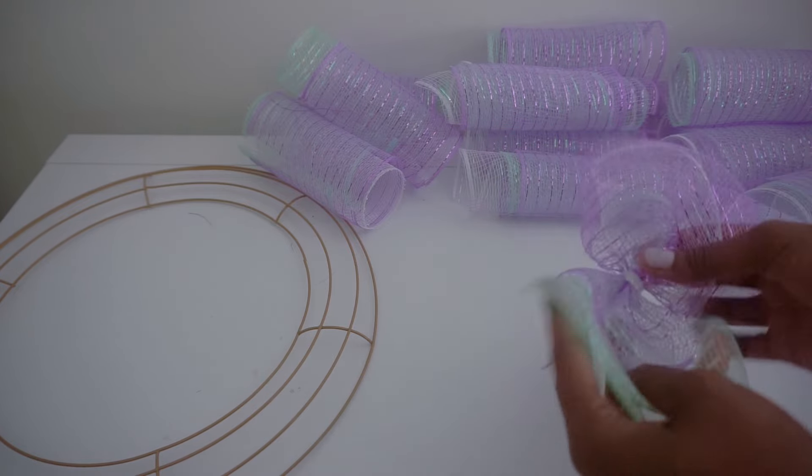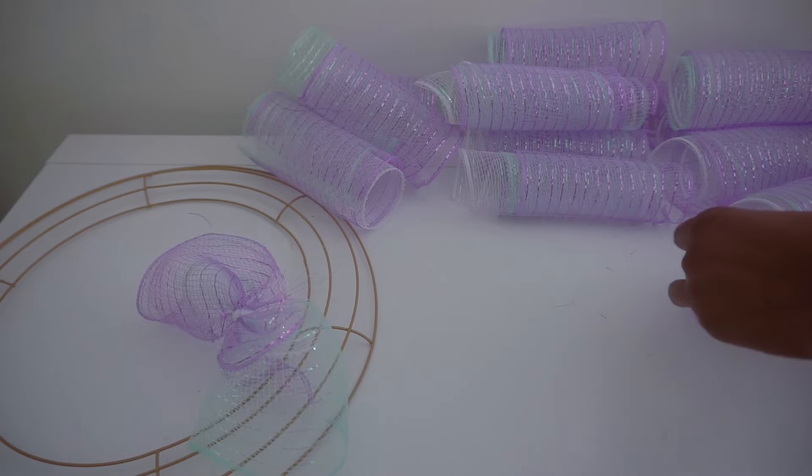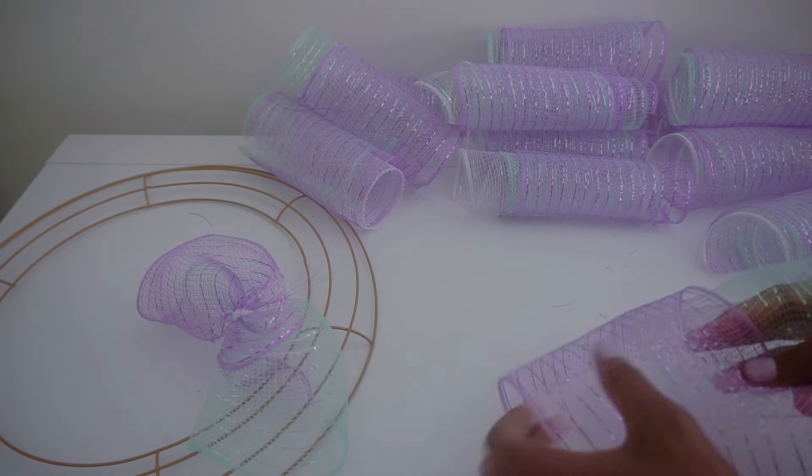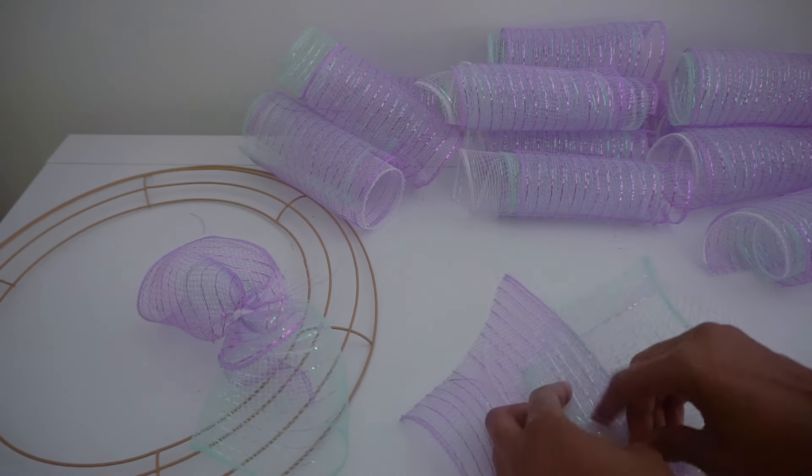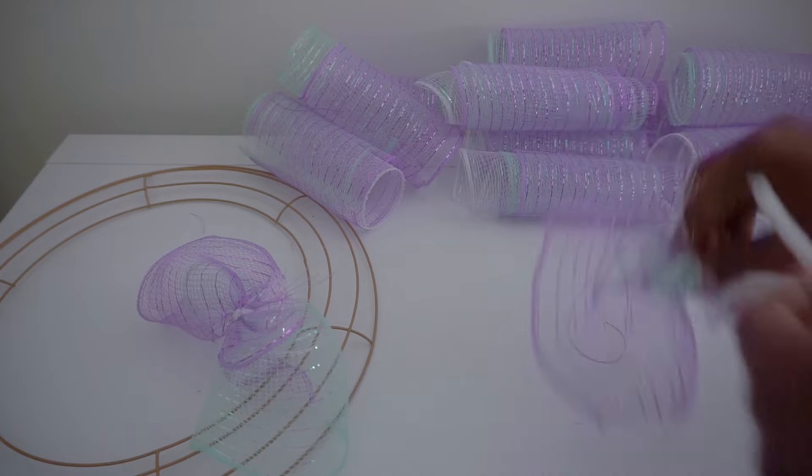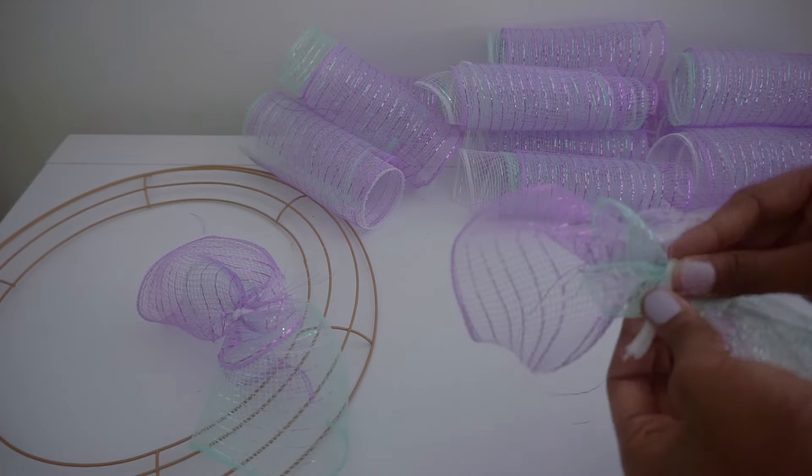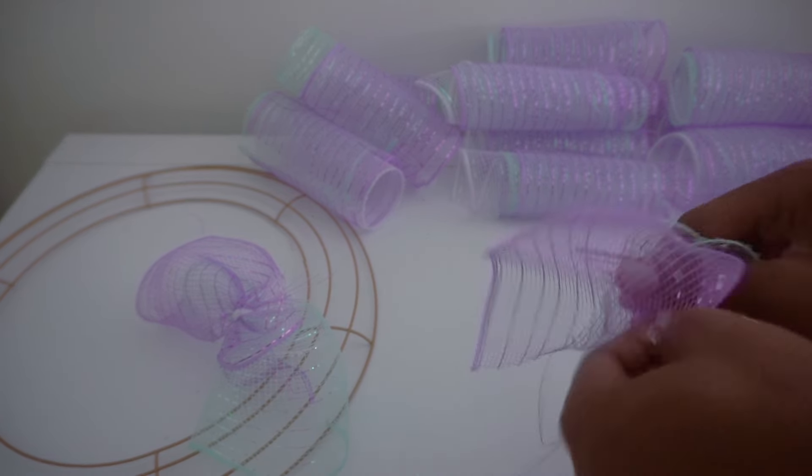And I like to alternate the color order and I'll just kind of switch it up as I'm working on my wreath. And then just scrunch, take my stem and twist it a couple of times.